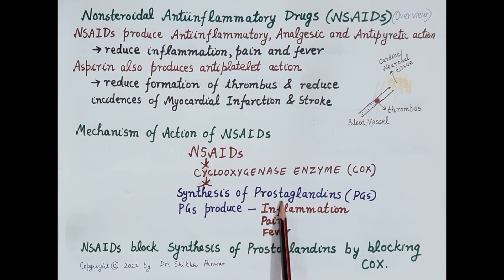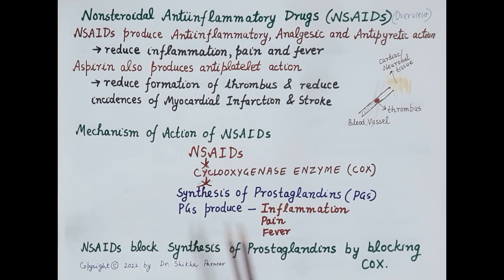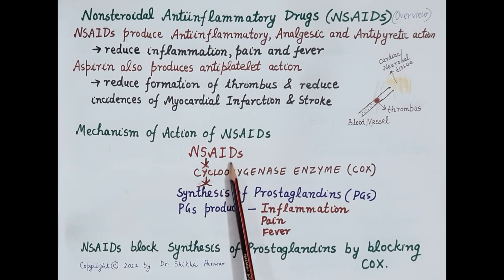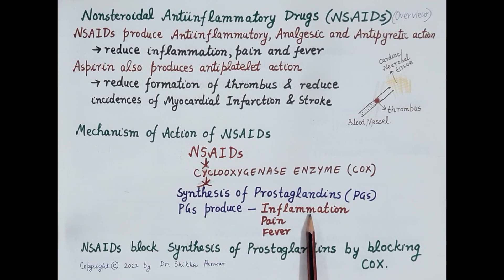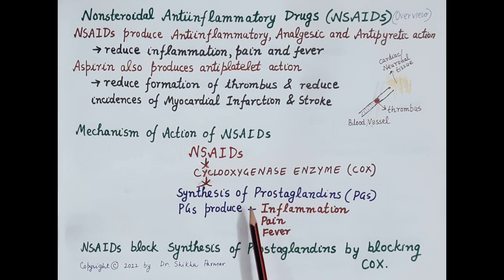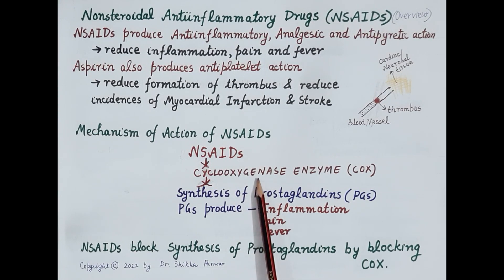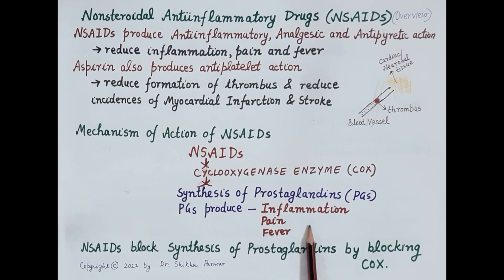Let's understand the basic mechanism of action of NSAIDs. NSAIDs inhibit the synthesis of prostaglandins. As these prostaglandins are responsible for producing inflammation, pain, and fever, NSAIDs by blocking synthesis of prostaglandins produce anti-inflammatory, analgesic, and antipyretic action. NSAIDs block the cyclooxygenase enzyme, blocking the synthesis of prostaglandins, and therefore reduce inflammation, pain, and fever.